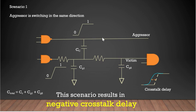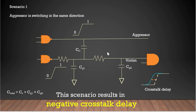As you can see here, this net is the aggressor and this net is the victim, and there is a coupling capacitance between them, and these are ground capacitances. So total capacitance is coupling capacitance plus ground capacitance. Here the aggressor is switching from 0 to 1 and the victim is also switching from 0 to 1, so aggressor and victim are switching in the same direction. Now let's try to understand what will happen with an example.